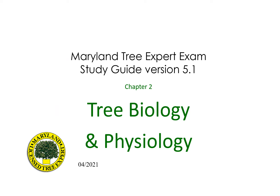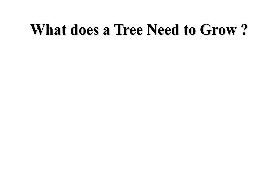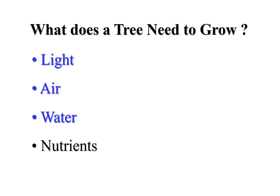Maryland Tree Expert exam study guide version 5.1, chapter 2: tree biology and physiology. During the course of this presentation, keep in mind what a tree needs to grow. These include light, air, water, nutrients, and the often forgotten need: space.